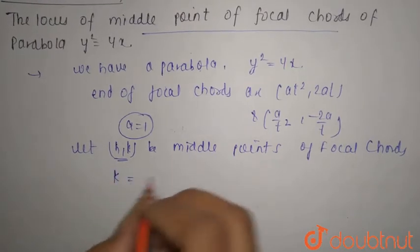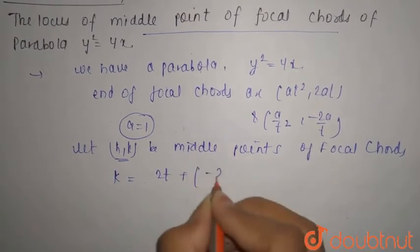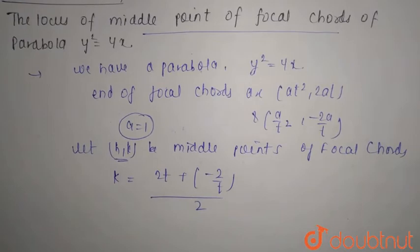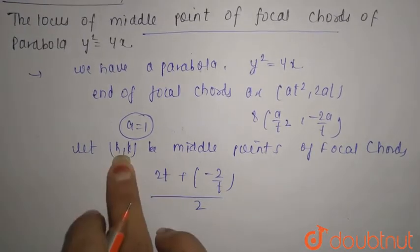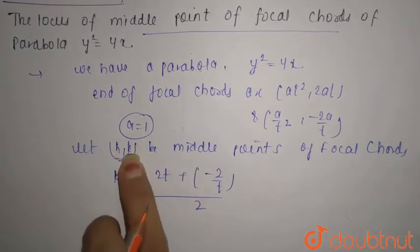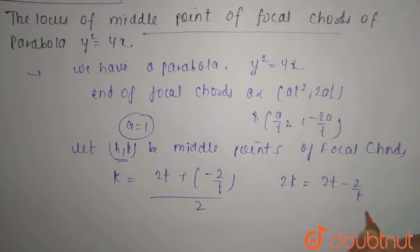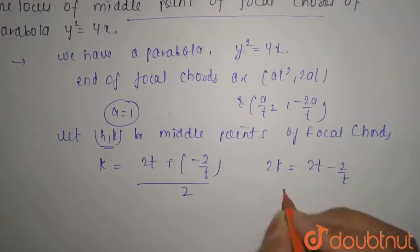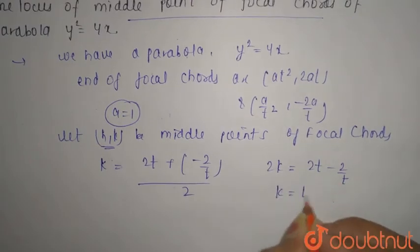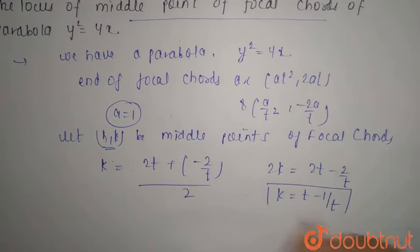From here, k = (2t + (-2/t))/2. When you multiply by 2, this becomes 2k = 2t - 2/t. Taking 2 as common gives k = t - 1/t. This is the first equation.